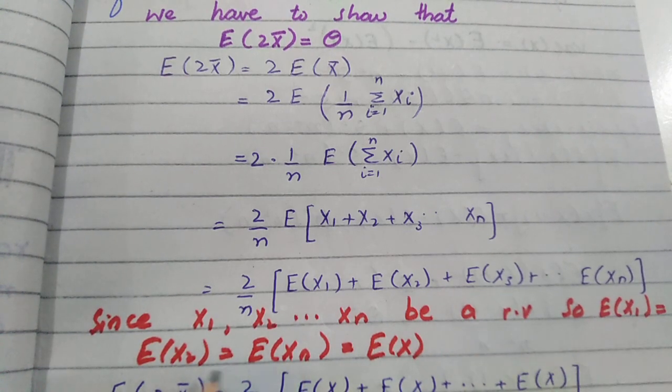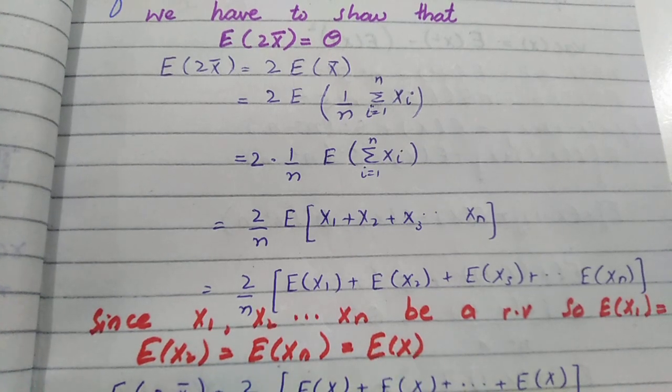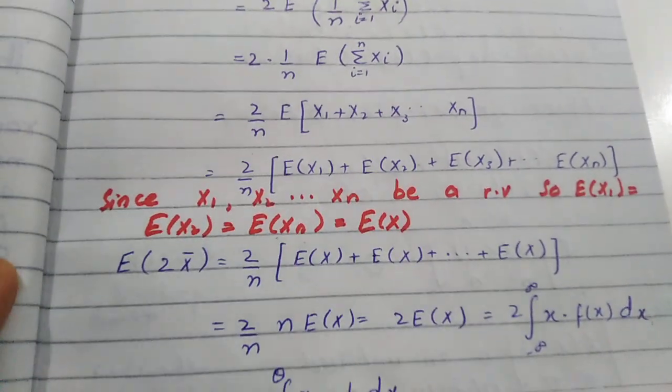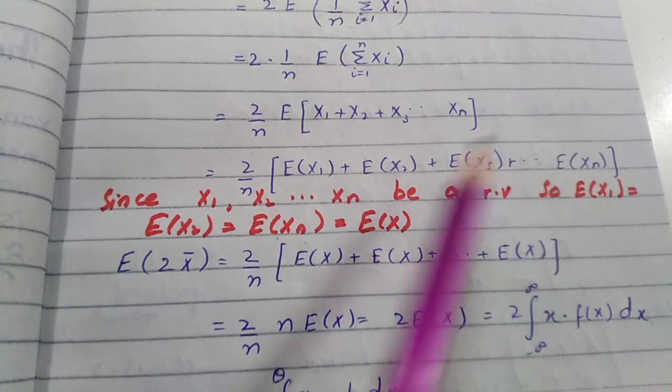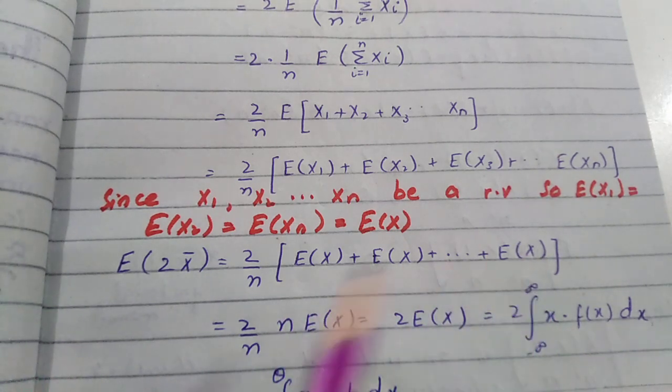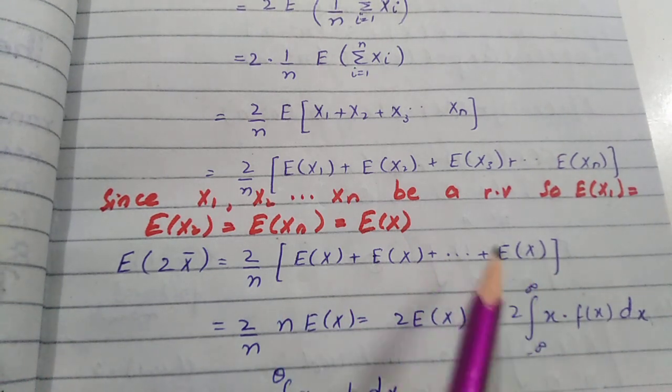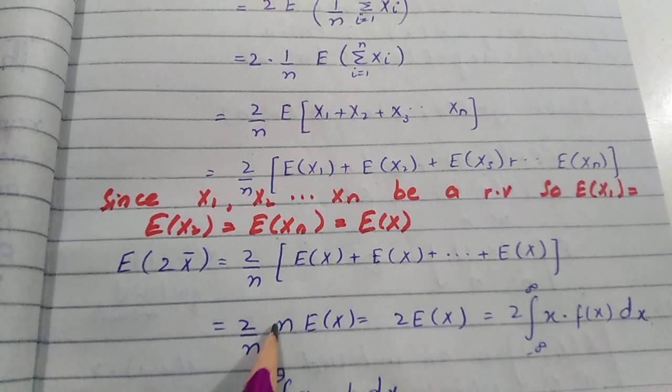The expected value of X1, X2, and Xn—that has exactly the expected value of X. Since X1, X2, ... Xn are identically distributed random variables, so E(X1) = E(X2) = E(X). This expectation, if we have n terms, is simply like n times the expected value.